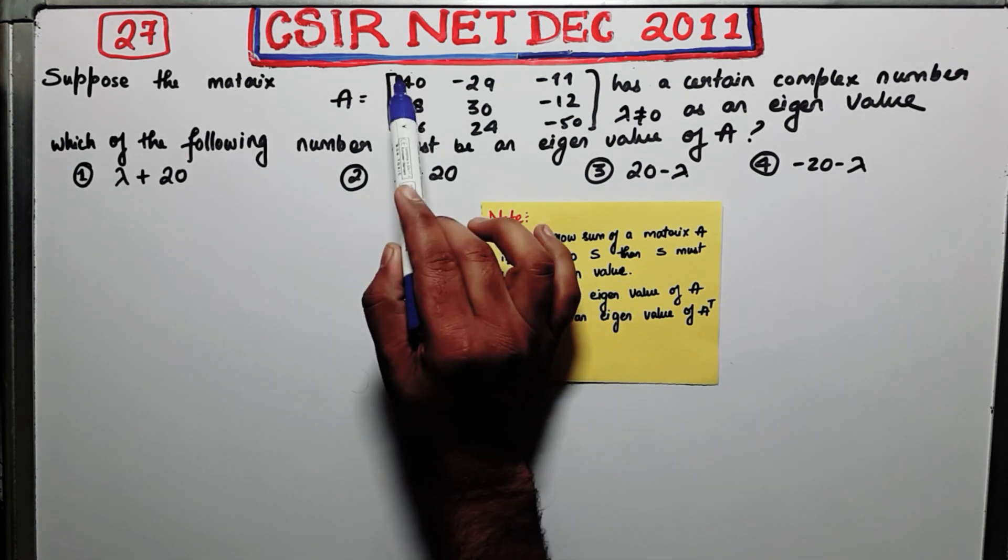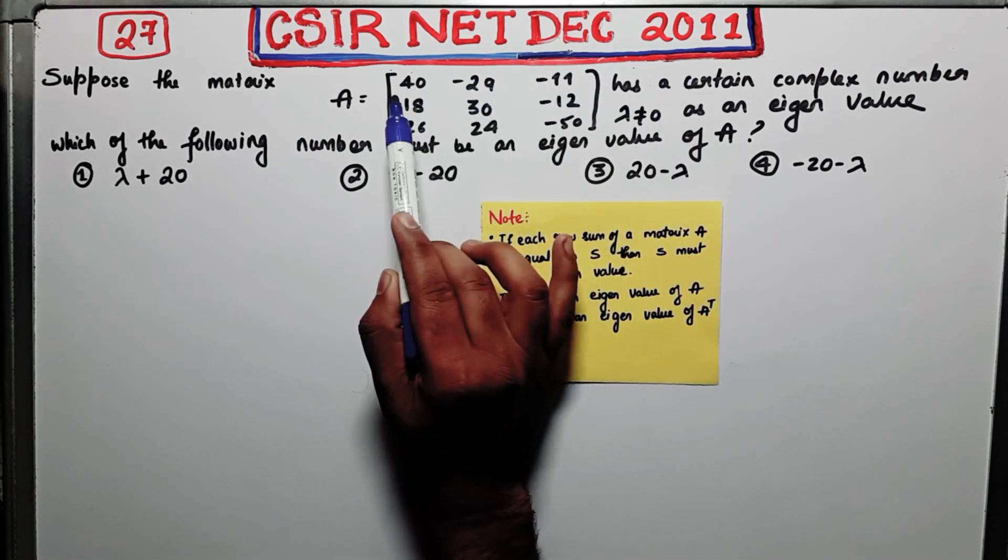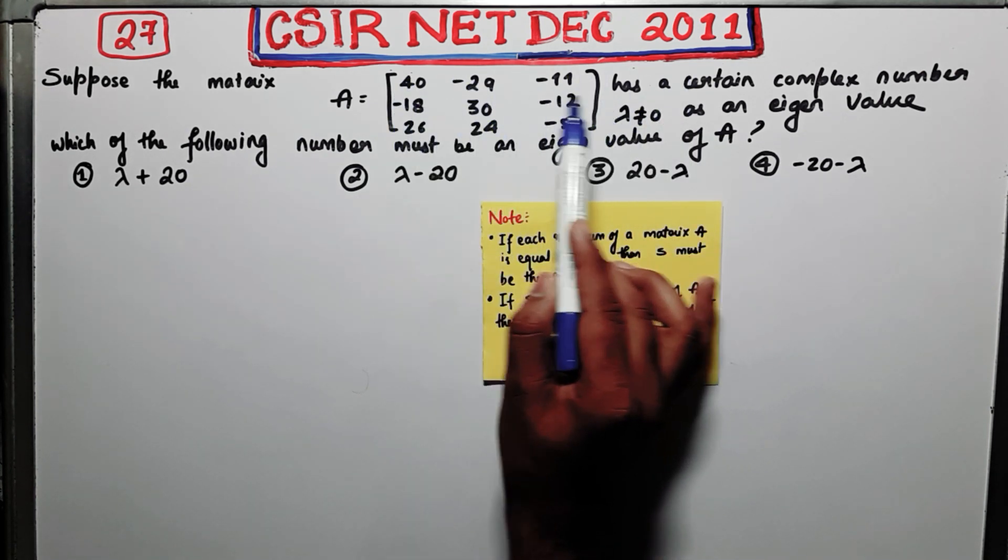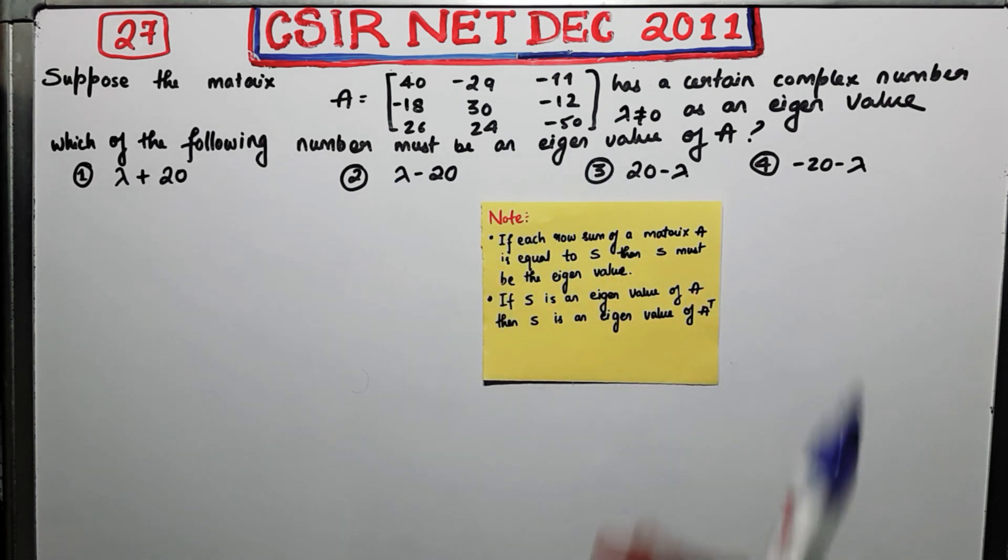It means that if you sum up these rows, for each row you find out the row sum. It says if for each row the row sum is equal, then that sum is actually the eigenvalue. This is what your note is suggesting us.